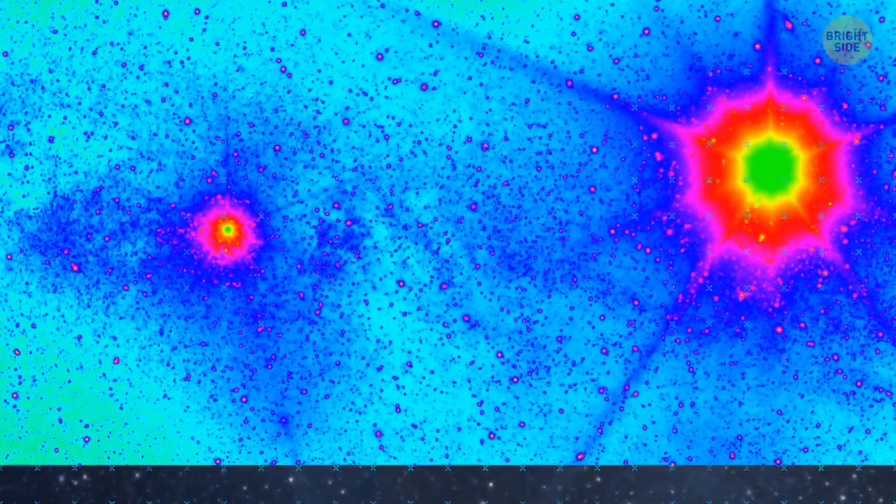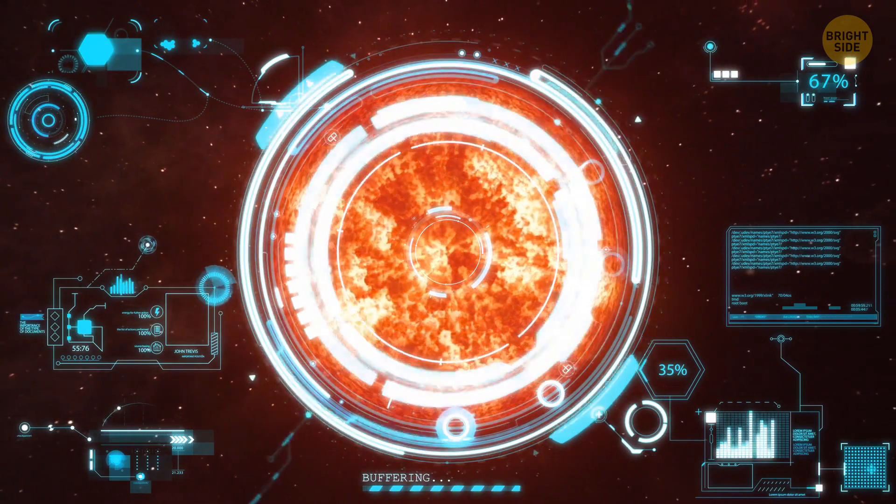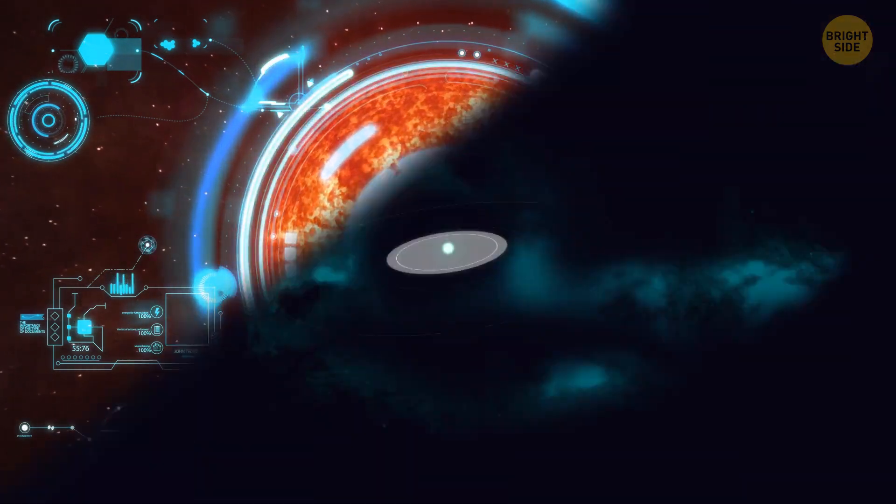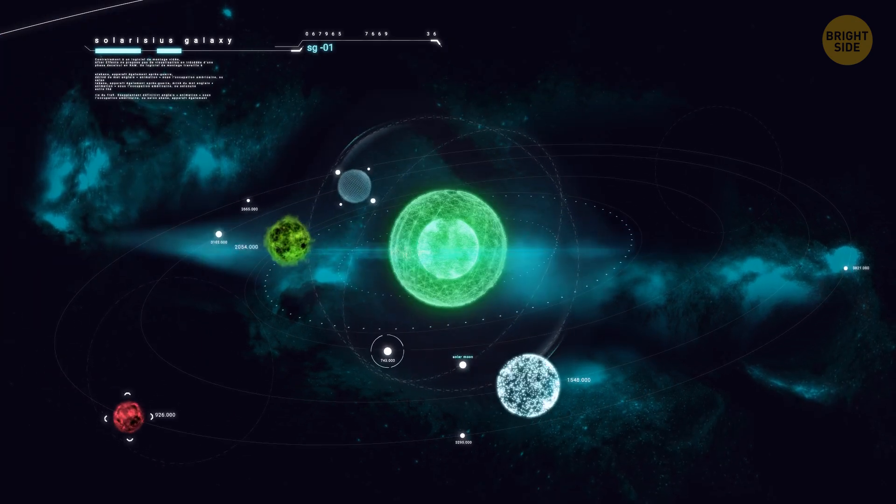This gadget can spot changes in a star's speed caused by a planet. If the star movement slightly changes, that means there must be a gravitational pull nearby. Years ago, this technique helped find the first known exoplanet around a star like our Sun.